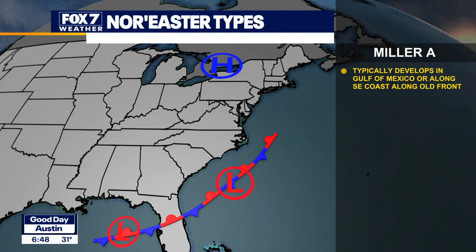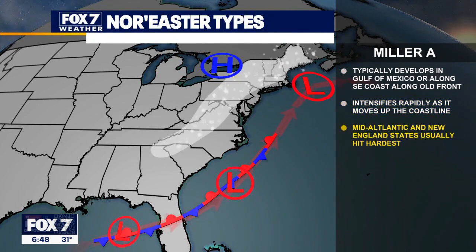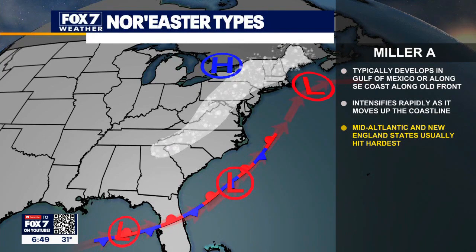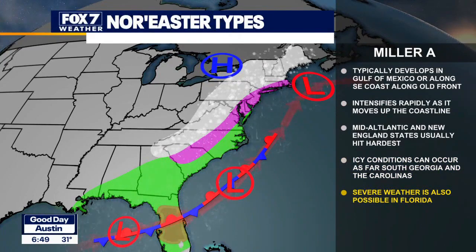Miller A nor'easters typically develop in the Gulf of Mexico or along the southeast coast along an old front. You can see the stationary front as it starts to move up the east coast, and as it does it will intensify rapidly. With this setup, the mid-Atlantic and New England states see icy conditions. These storms can occur as far south as Georgia and the Carolinas, and severe weather is also possible in Florida.